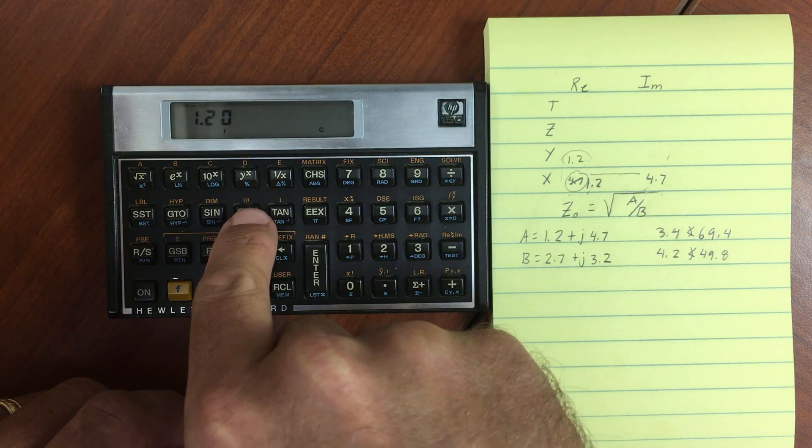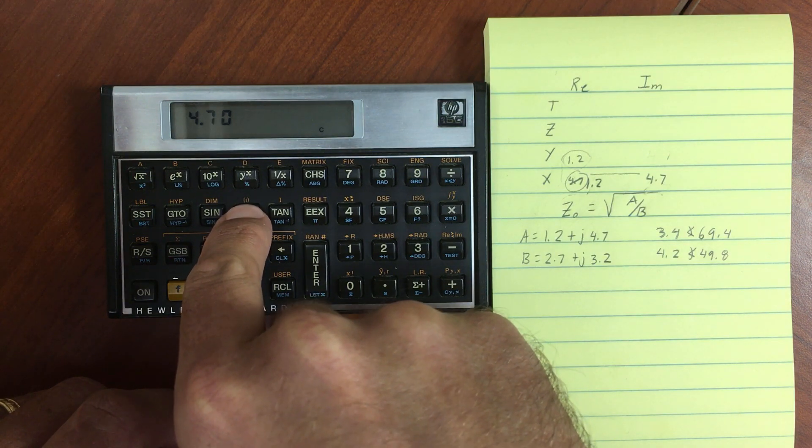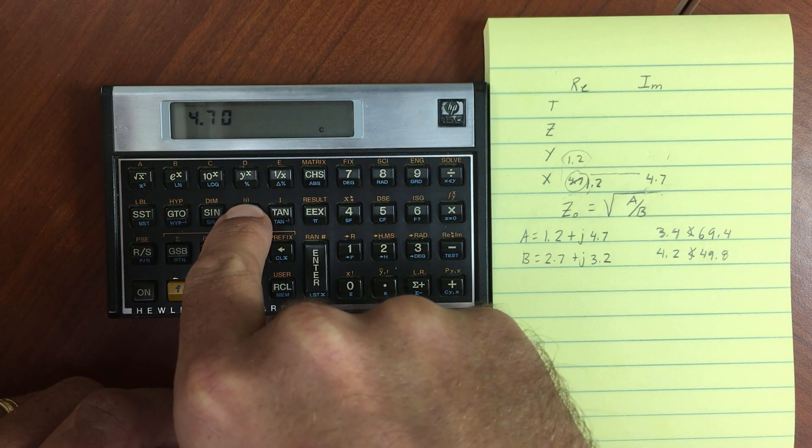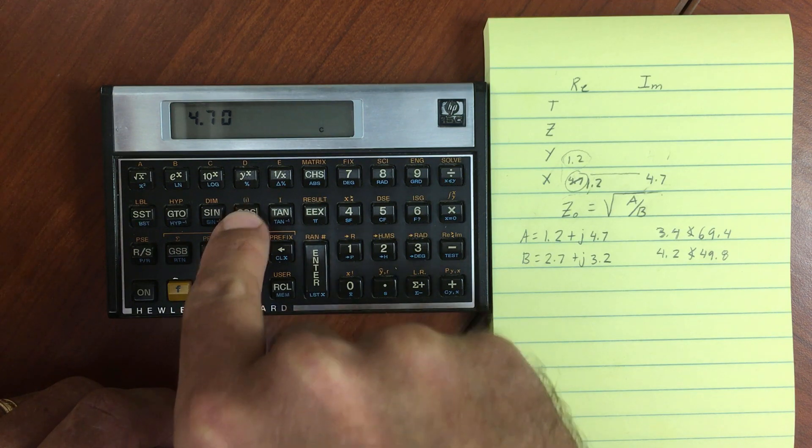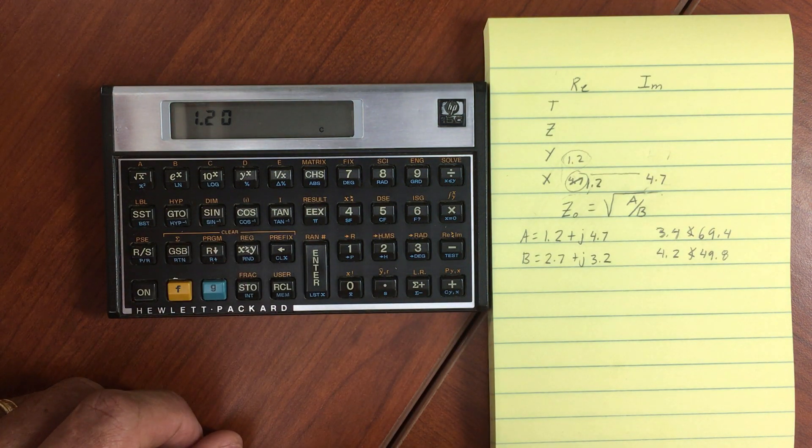To temporarily see my imaginary number, I can push Shift, and this parenthesis, lowercase i. If I hold that down, then I can see the imaginary portion. If I release it, then it disappears.